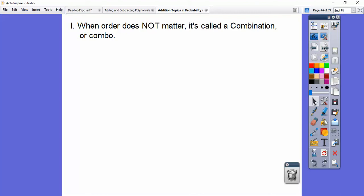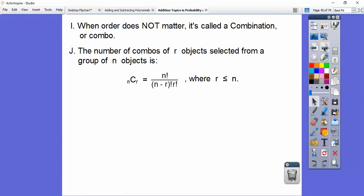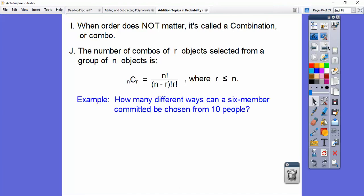So when order doesn't matter, it's called a combination. I call them combos here. So the number of combinations of R objects taken from a group of N objects is NCR. So this looks just like NPR, except we have the additional R factorial. NPR is N factorial over N minus R factorial. NCR is your P factorial or your permutation one with the additional R factorial right there.